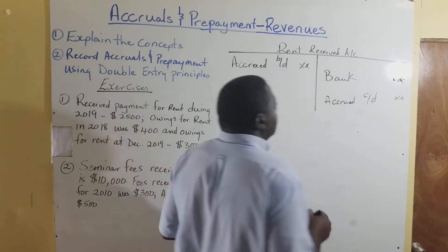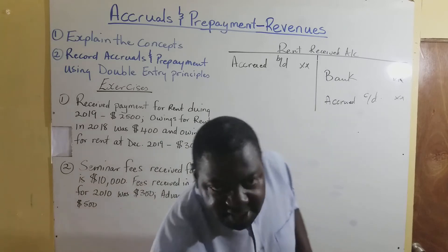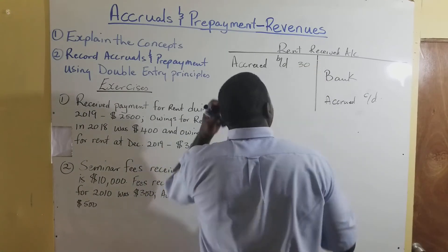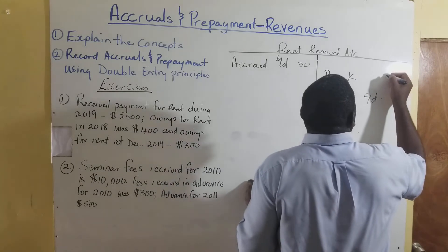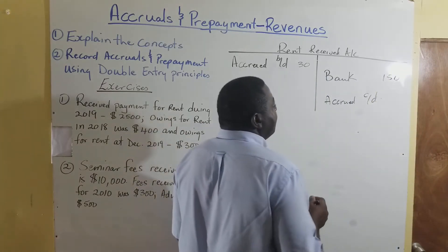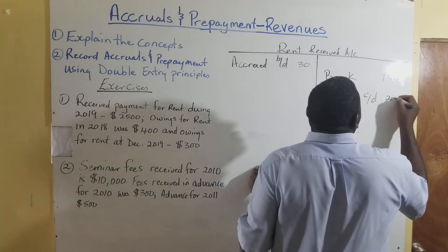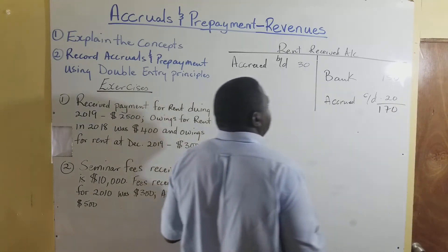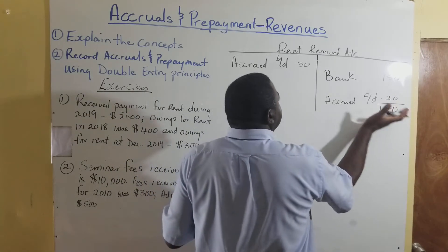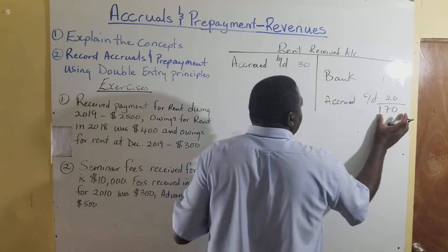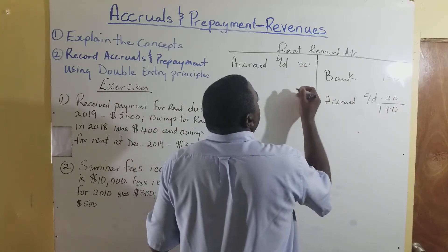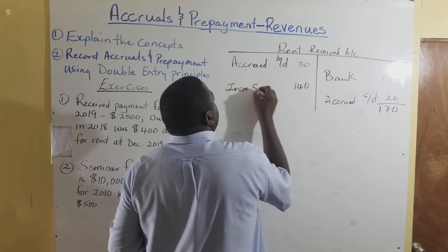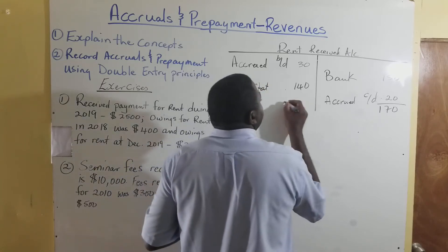Let's use real figures so you can relate. Assume that the opening accrued is $30, and assume that they have paid us $150, and the closing accrued is $20. So the total is going to be $170. The difference — taking $30 from $170 — gives us $140, and this is the amount that will go to the income statement.